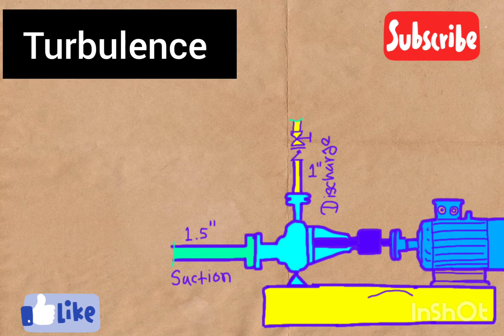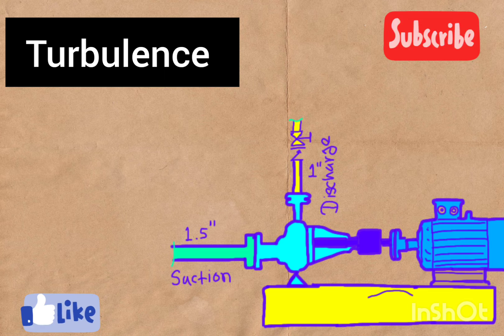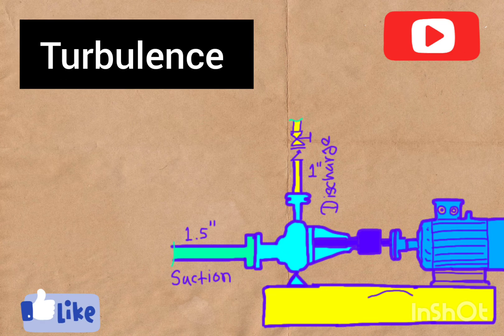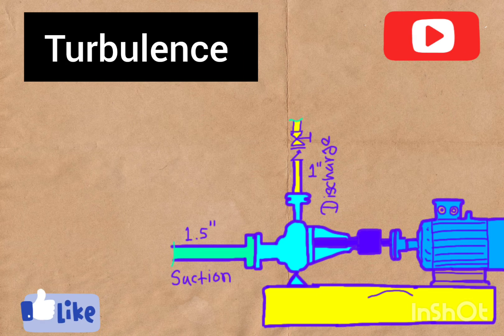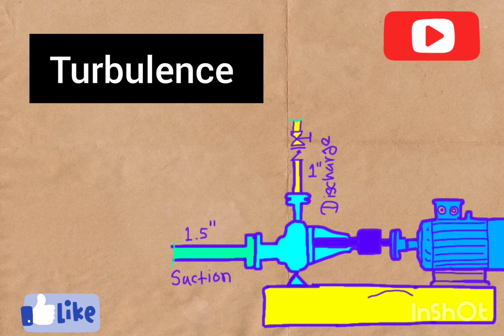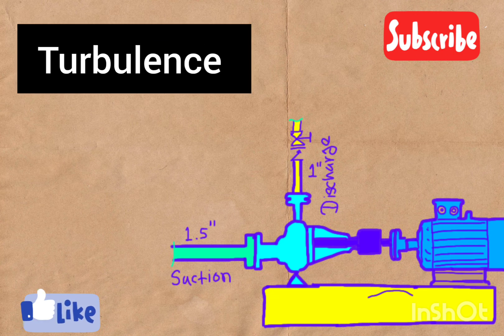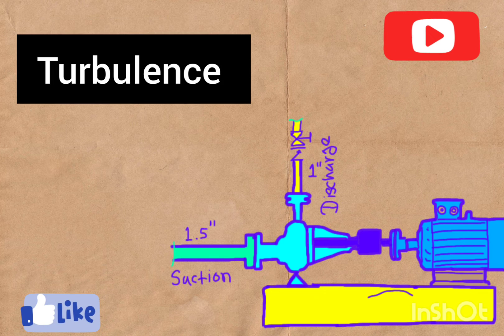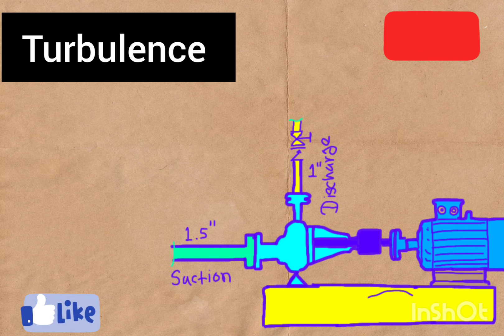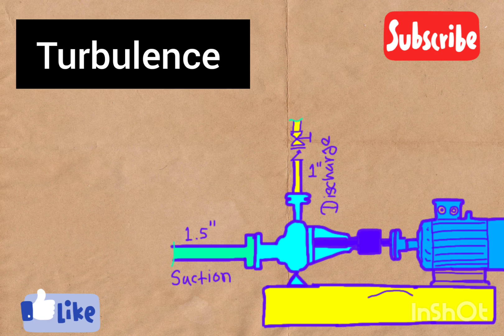The third reason is turbulence. Let's keep it real simple: a big suction side means smooth sailing of water, no bumps or turbulence. Think of it like a smooth highway for your pump. Less turbulence means our pump works better and doesn't waste energy.